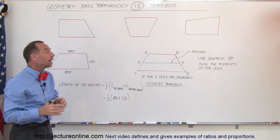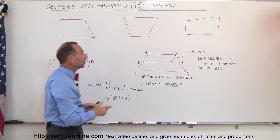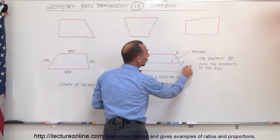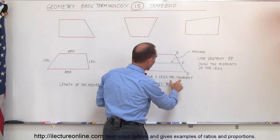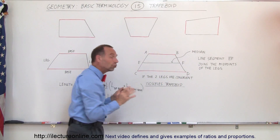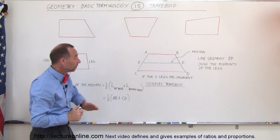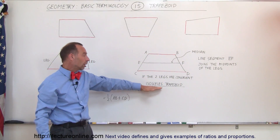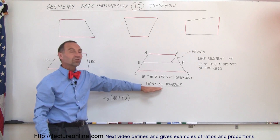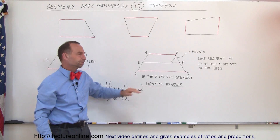Sometimes it turns out that the two legs are congruent. When the two legs are congruent, we call it an isosceles trapezoid.